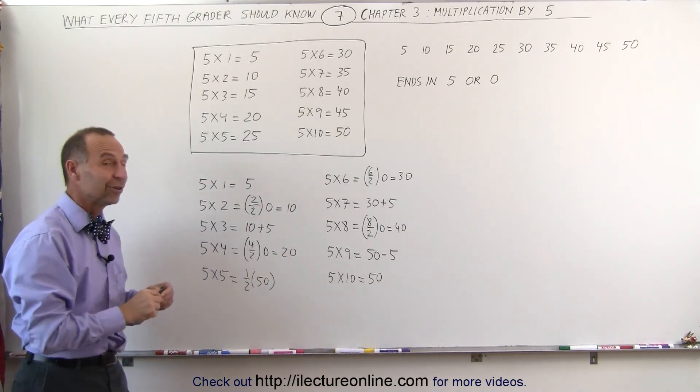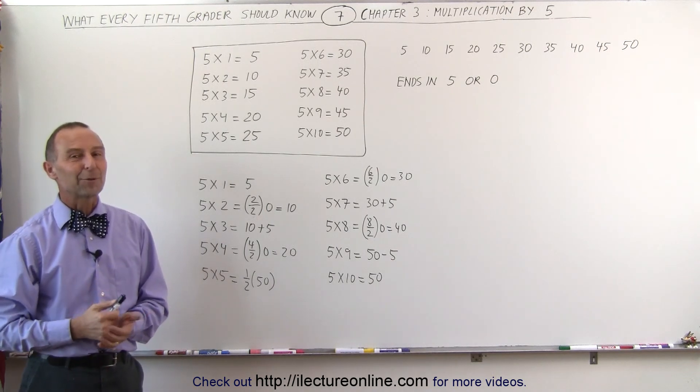Those are the tricks that we use to make it easier to multiply with 5, and that's how we do it.